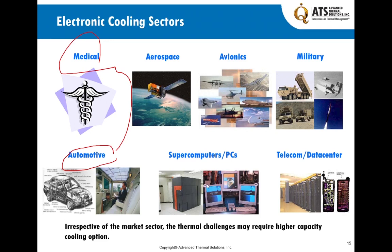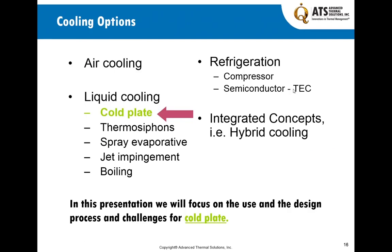Having said that, we should not take this step blindly. When we go to liquid cooling applications — from a simple chiller to a very sophisticated data center liquid cooling application — it is a complex and more costly process. It has higher capacity, but we need a very methodical approach. The cooling options include air cooling, then liquid cooling with cold plates, thermal siphons, spray evaporators, jet impingement, boiling, as well as refrigeration using compressor-based systems or semiconductor TECs, and integrated hybrid approaches. In this presentation, we'll focus on the cold plate.